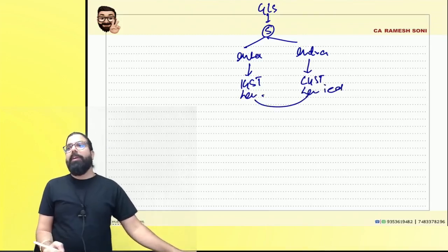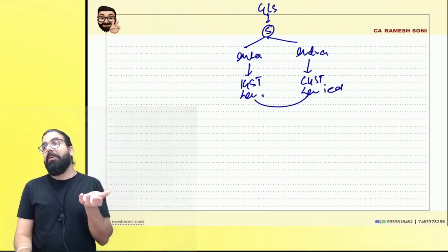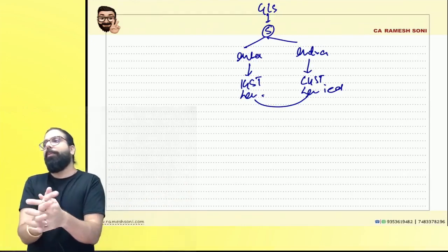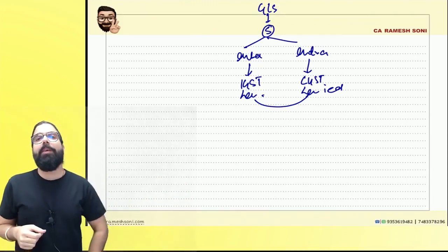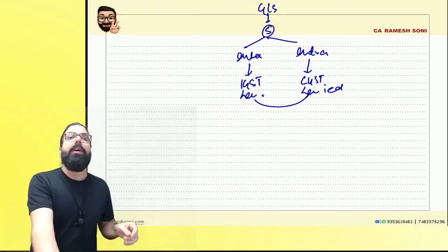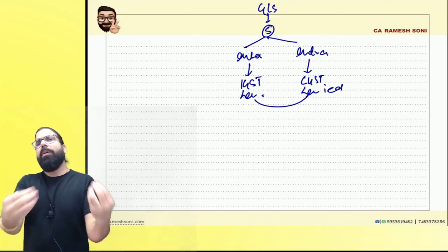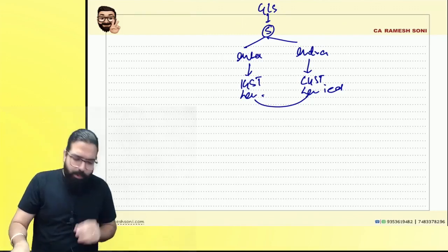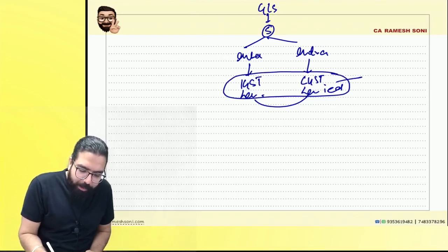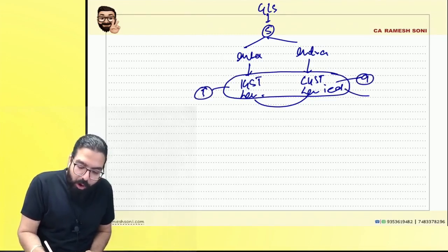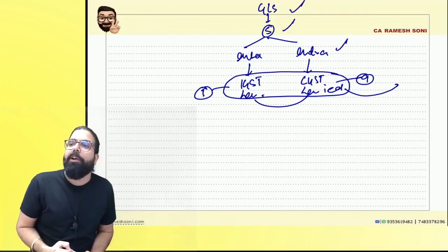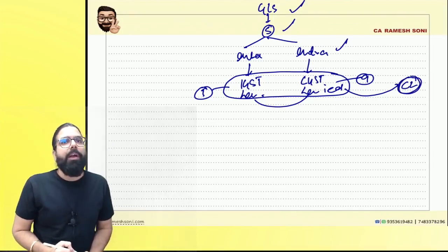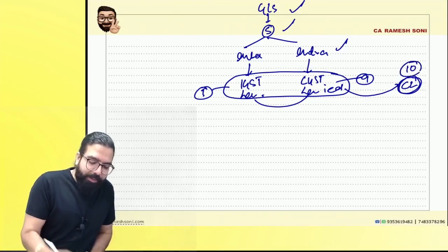Once GST was levied, some people went to the government and said, 'Sir, collecting GST, taking input credit, setting it off, paying to the government — so much headache. Can you please give us a simple scheme?' The simple scheme introduced by the government is known as the Composition Scheme — a simple scheme for manufacturers, traders, etc., who are doing small business. GST levy was under Section 9 and Section 5, and the Composition Levy scheme was drafted under Section 10.